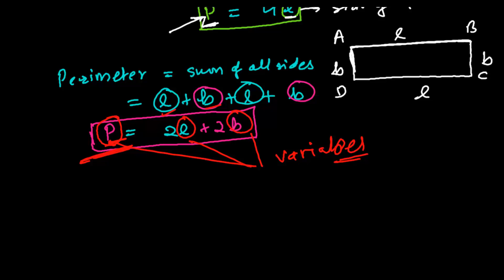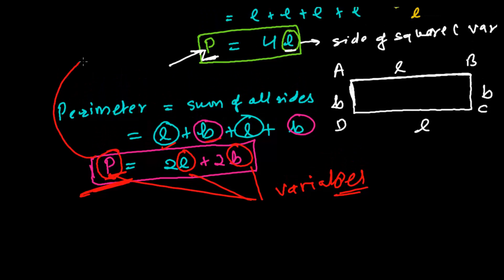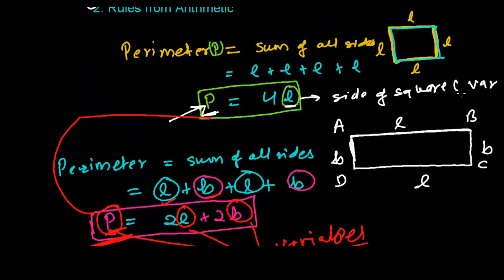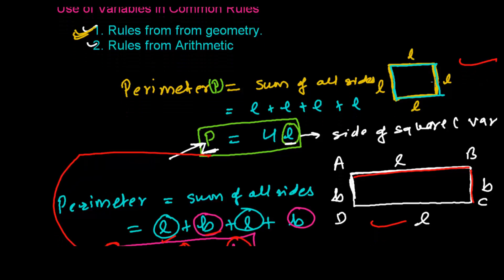By using algebra you've just got two very powerful rules. No matter how big or small the square or rectangle you have, if you have the measurement of the length and breadth you can find the perimeter of any geometrical shape. This is how we use variables in geometry — to form rules so that we can find perimeter, area, volume, and many other things in the future.